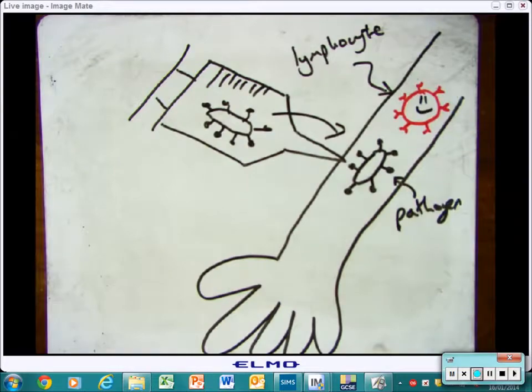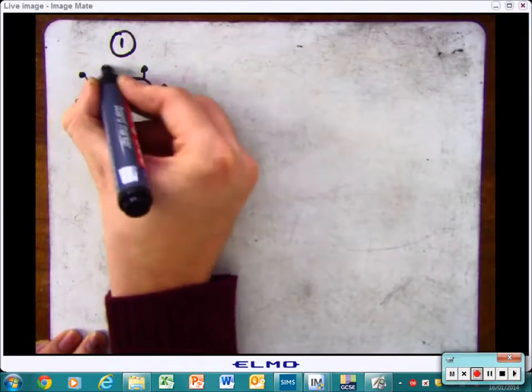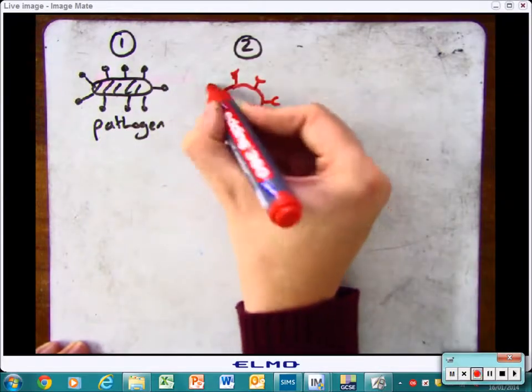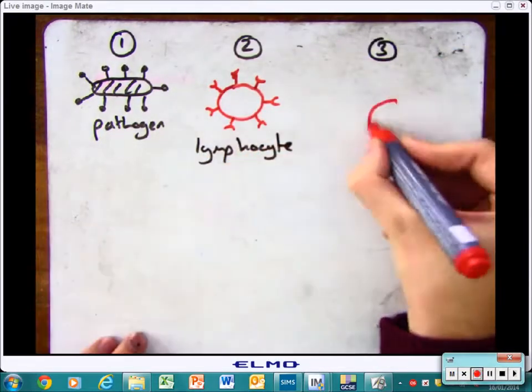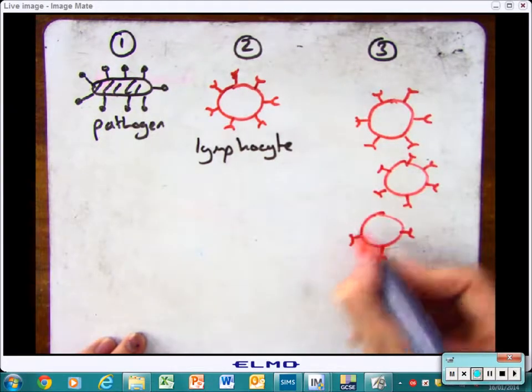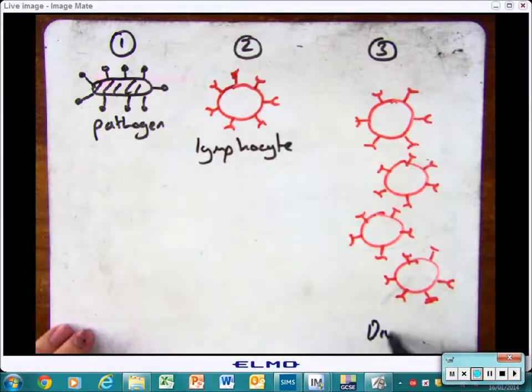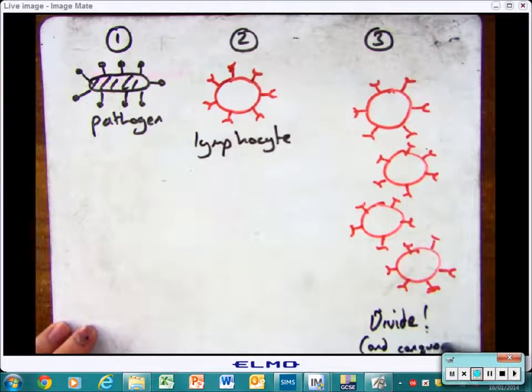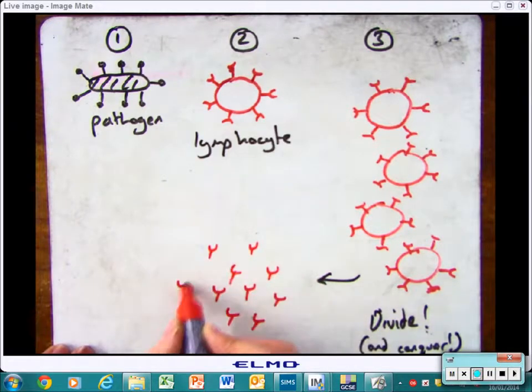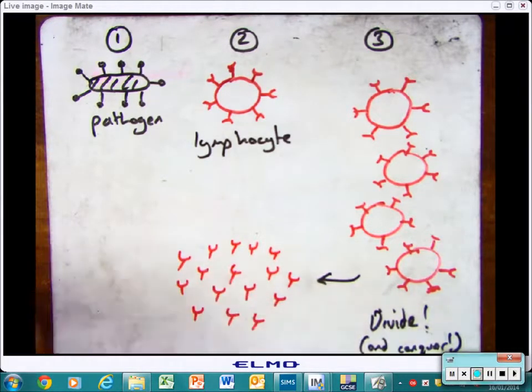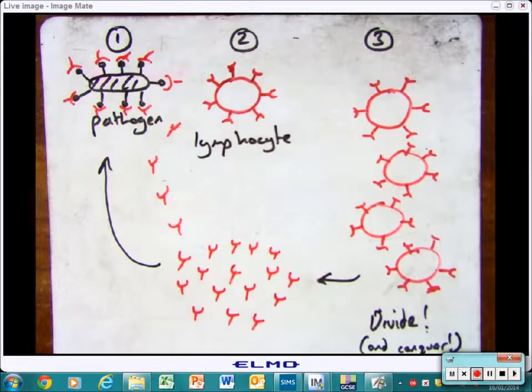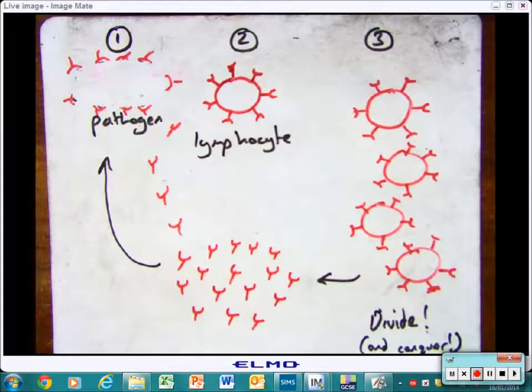A white blood cell that produces antibodies. The pathogen comes along, the lymphocyte comes near to it and you'll see that they have little parts that attach onto the pathogen. They will produce antibodies that are specific to that pathogen and then reproduce. They will divide and conquer until there are enough of them to take out the pathogen. These antibodies will come along and attach onto the pathogen itself. Once they do this, it helps to destroy the pathogen itself, kills it and wipes it out.